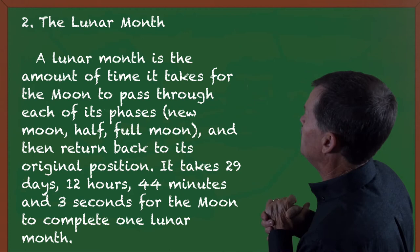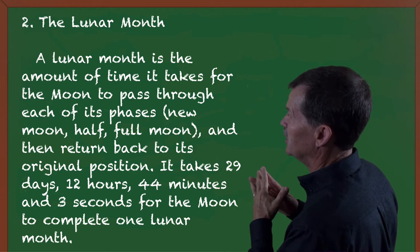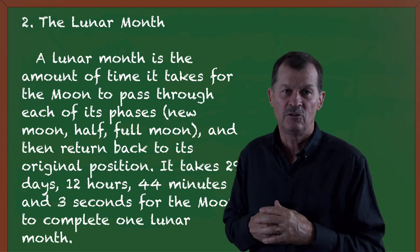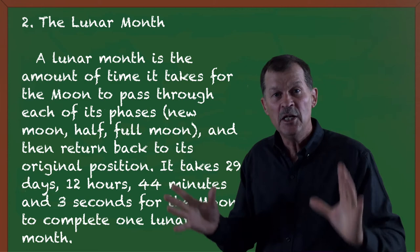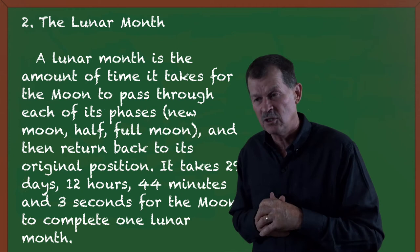So, what we have is through the heavens, you have day and night. You have 24 hours. That is rotation, rotational speed. Now, we have a month. And, it says the lunar month is the amount of time it takes for the moon to pass through each of its phases, which means new moon, half moon, full moon, and then return back to its original position. It takes 29 days, 12 hours, 44 minutes, and 3 seconds for the moon to complete one lunar month.